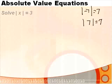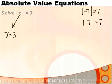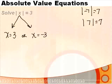When solving absolute value equations, most of the time you'll get two possible answers and two equations to work with. For the problem: absolute value of x equal to 3, x could be positive 3 because the absolute value of 3 is 3. But x could also equal negative 3 because the absolute value of negative 3 is also positive 3. So we get two possible answers.